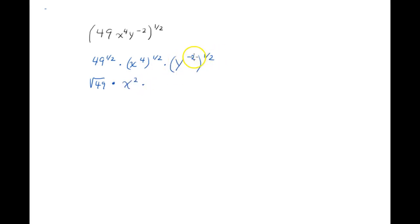Here we have y to the negative two, all raised to the positive one-half. Again, we're going to multiply these exponents. So negative two times one-half is negative one, so that's y to the negative one.